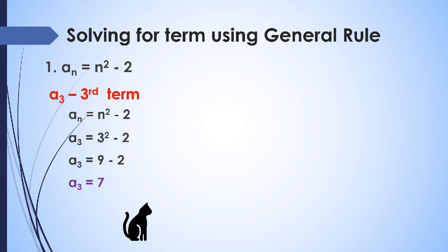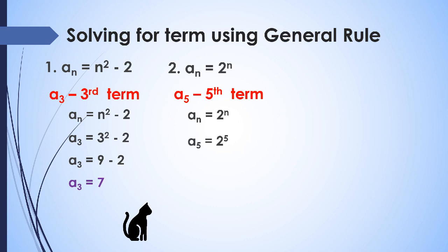For the general rule a sub n equals 2 raised to n, let's find the fifth term. We use the general rule, replace a sub n with a sub 5, and replace n with 5. So a sub 5 equals 2 raised to 5, which expands to 2 times 2 times 2 times 2 times 2, giving a sub 5 equals 32.